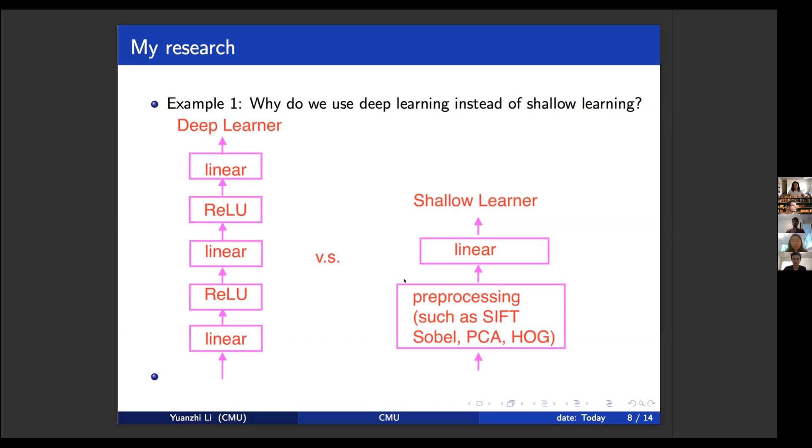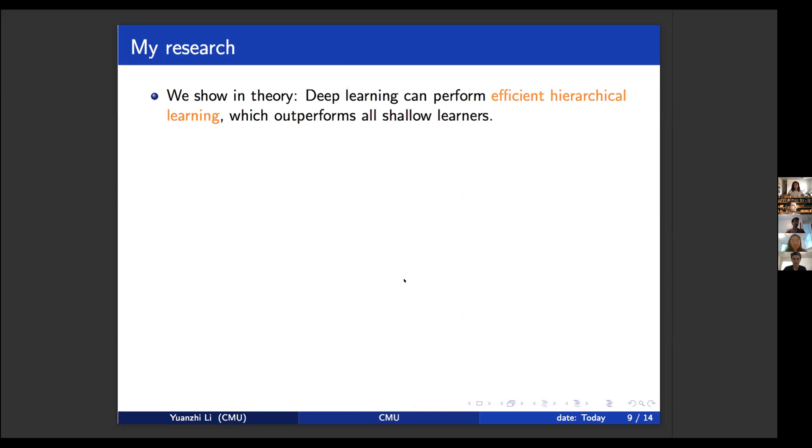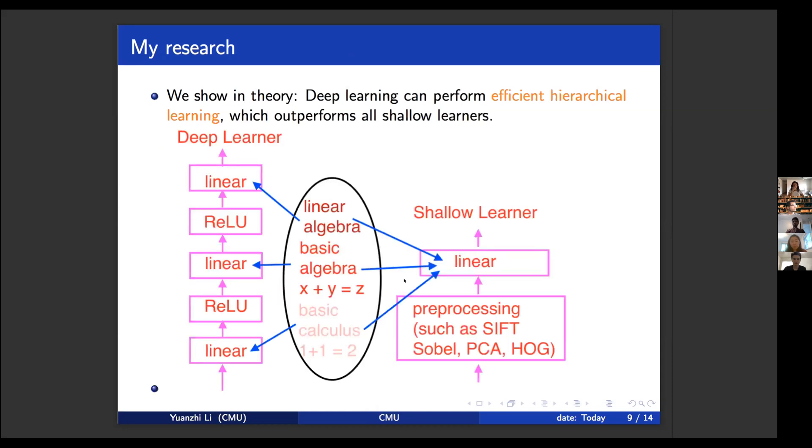So why is this deep learner on the left-hand side better than the shallow learner on the right-hand side? Empirically, it's better, but theoretically, mathematically, why? So in the past works, we have shown in theory that deep learning is capable of performing efficient hierarchical learning, which outperforms shallow learners. For example, you have the training data. The training data usually contains a hierarchy. In the training data, there are simpler training samples, such as in this training data, there are examples associated with basic calculus. And there are examples that are a little bit harder associated with basic algebra. And then there are hardest examples that are associated with linear algebra. For images, you may think of some images that are in the standard position. Some images are not so standard and some images are just very weird. And for these deep learners, it can actually automatically distribute the data with different difficulty into different layers of the neural net to learn it.